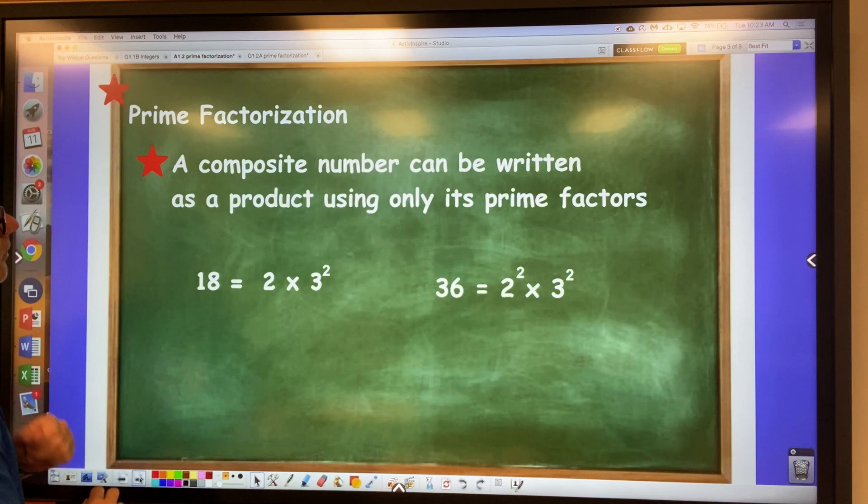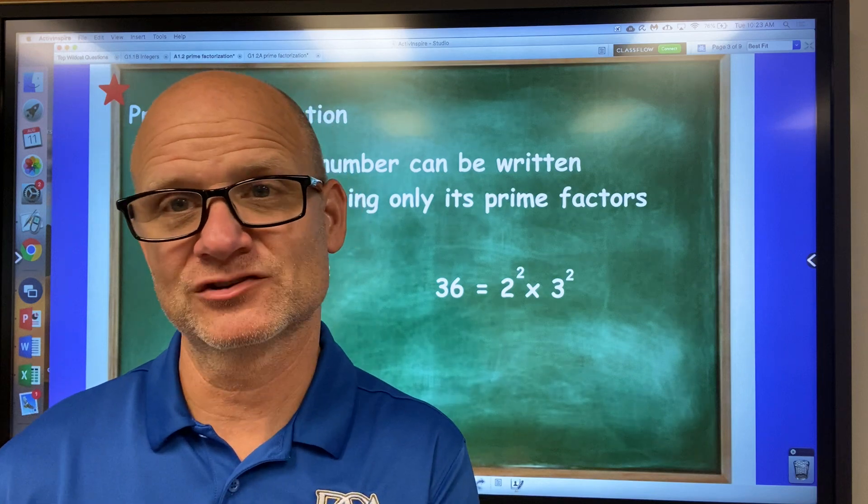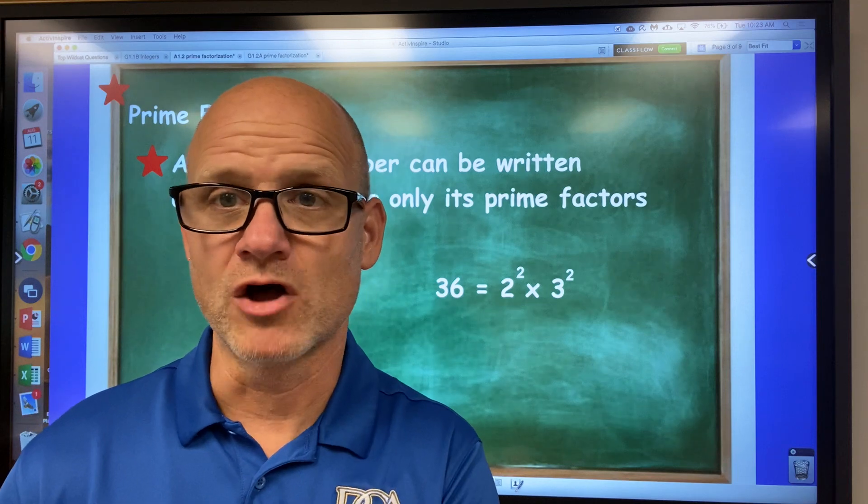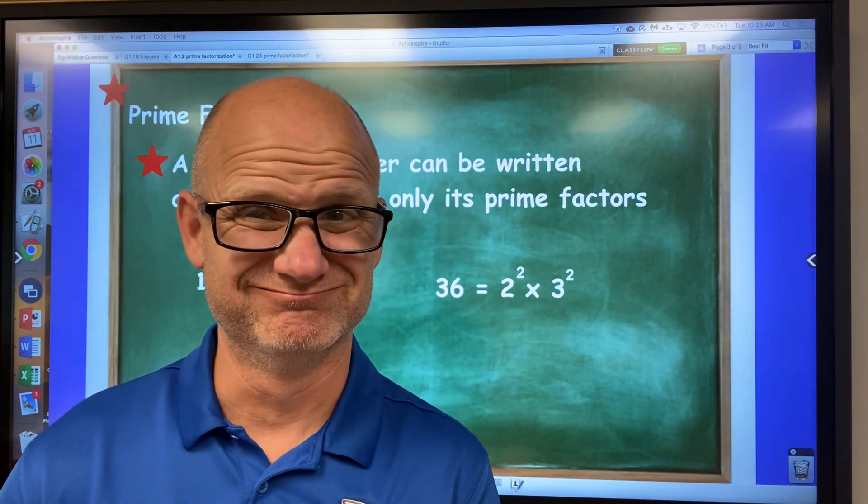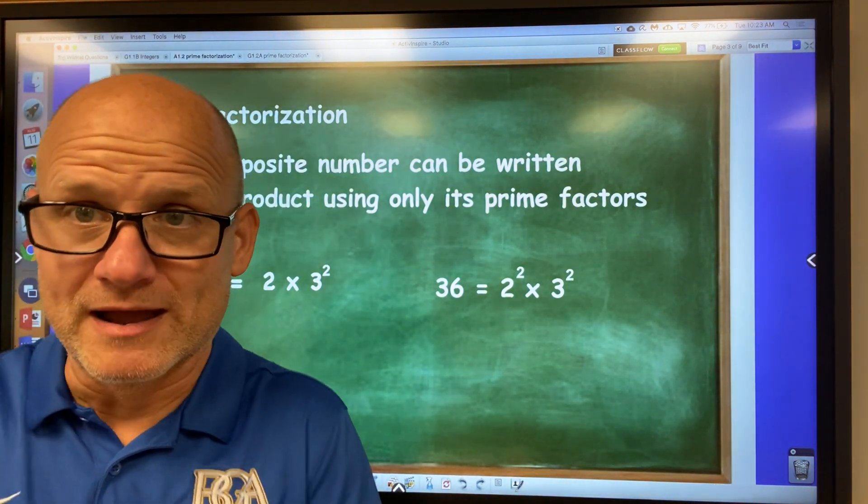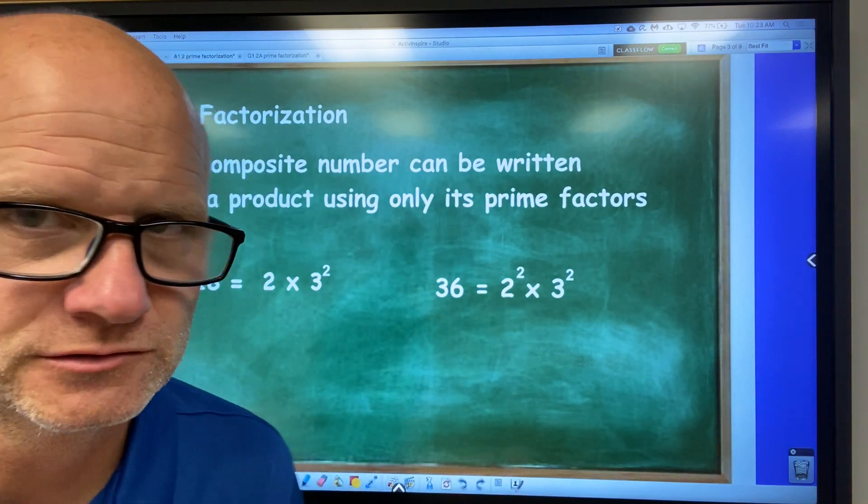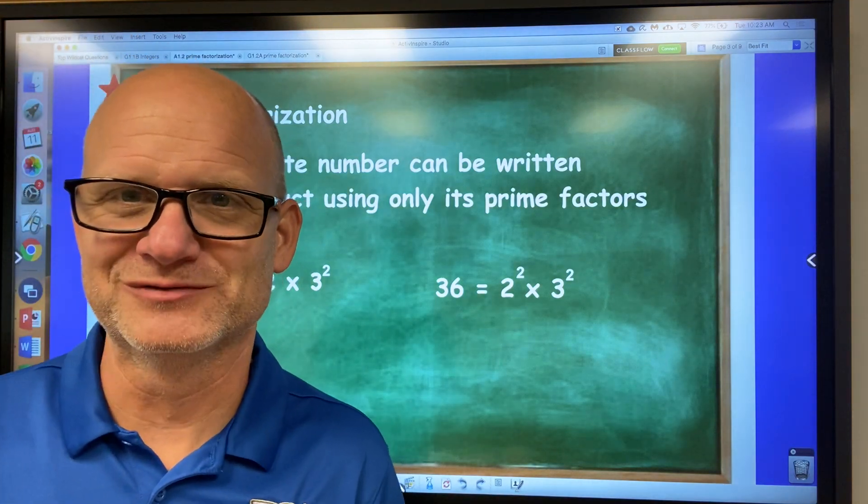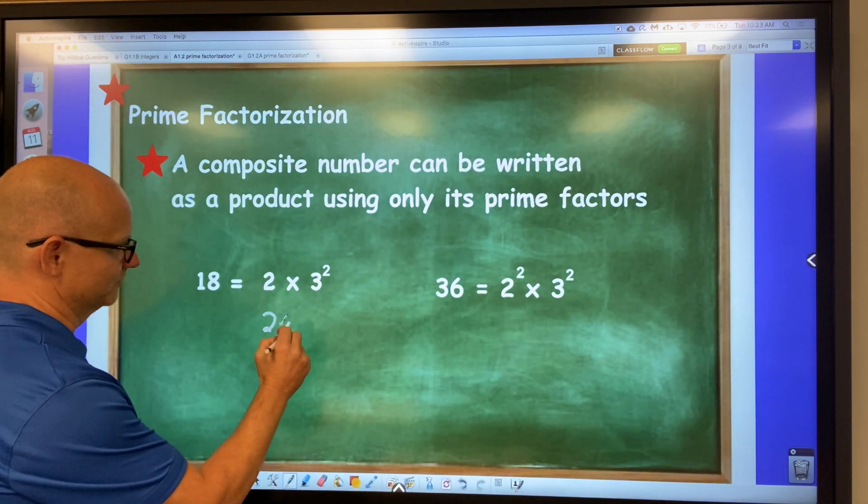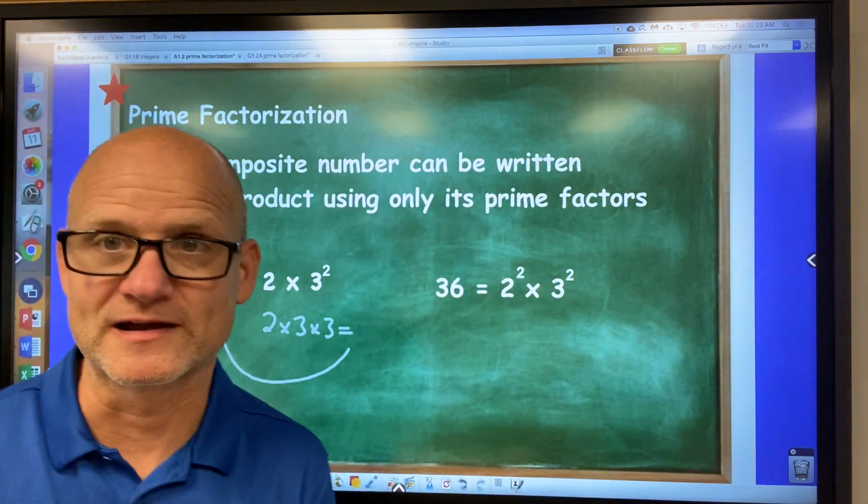So we're going to talk about prime factorization. Prime factorization is just taking a composite number and factoring it, and factoring it, and factoring it until you have all prime numbers. That's it. For example, if we factor 18, prime factorization, we would get two times three to the second power. Because two times three times three is 18. That's prime factorization.